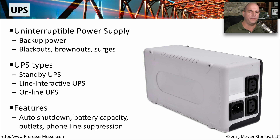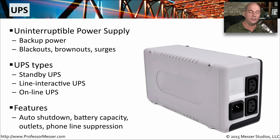There are many different functions and features available on UPSs, depending on which one you buy. Many come with an auto-shutdown function — if the UPS recognizes that there's no power coming from the power line, it can send a message to your servers to automatically and gracefully shut down before you run out of battery power. You can get different battery capacities, different numbers of outlets, and some even provide phone line suppression or cable modem suppression to prevent spikes or surges coming through those particular links as well.